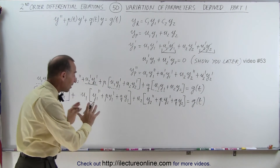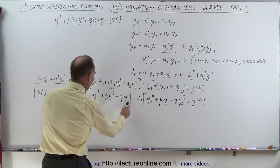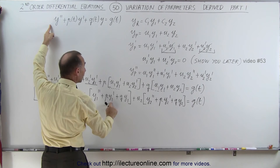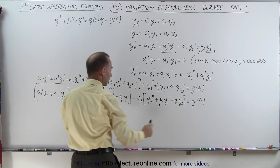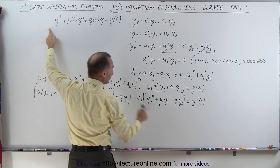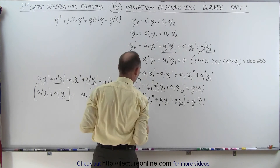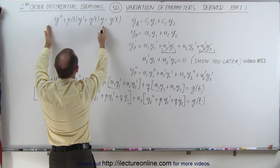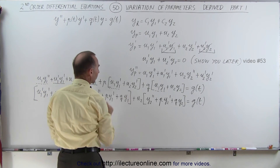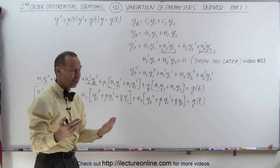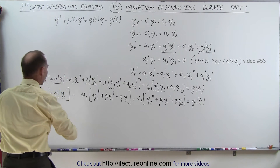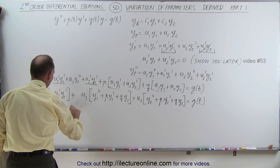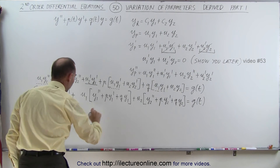There was a very special reason why we separated the terms this way. Notice that what's inside the y1 grouping is the same format as the original differential equation but with y1 — which is part of the homogeneous solution. And the y2 grouping looks exactly the same but with y2, also part of the homogeneous solution. Since y1 and y2 are solutions to the homogeneous differential equation, which equals zero, those two grouped expressions must each equal zero and disappear. All we have left is u1 prime y1 prime plus u2 prime y2 prime equals g of t.